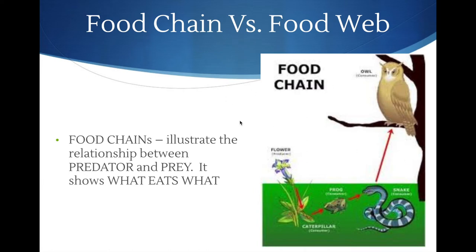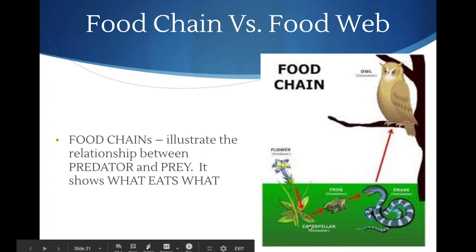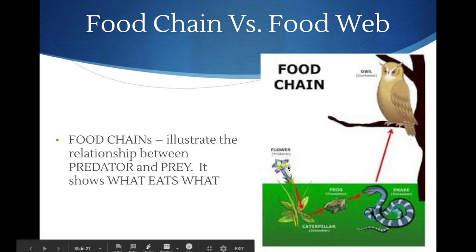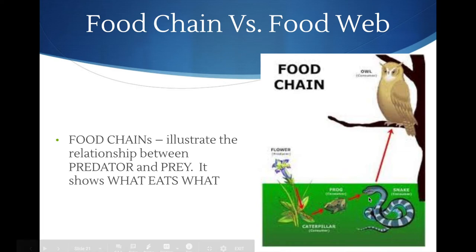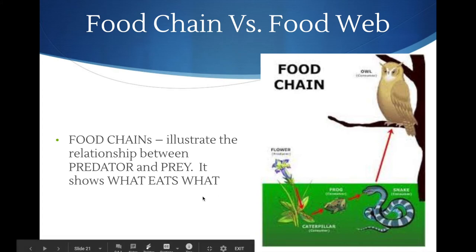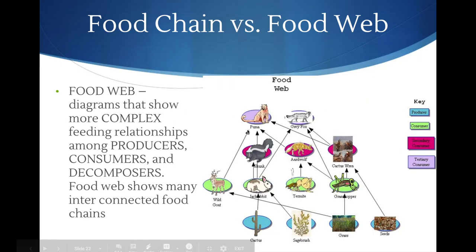Now, food chain versus food web. A food chain illustrates the relationship between a predator and prey and shows what eats what. If you look at this picture, the flower has an arrow pointing to the caterpillar — that means the flower gives energy to the caterpillar. The arrow signifies the direction of energy movement, not simply what eats what. So the caterpillar gives energy to the frog, the frog to the snake, and the snake to the owl after it's eaten.